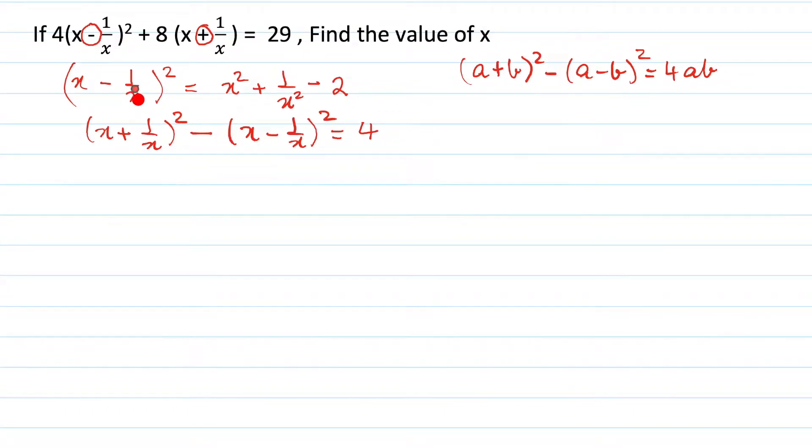Alright? So now can you see we have (x - 1/x)² squared? That means we need this value. So we will have (x + 1/x)² - 4 will be equal to (x - 1/x)². We have transferred this that side and this 4 we have taken this side.